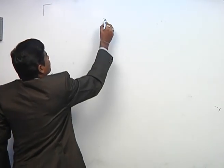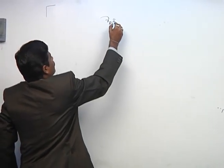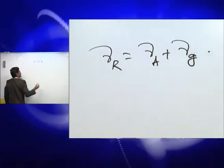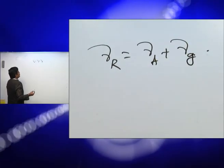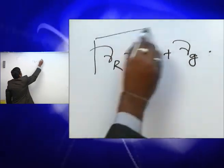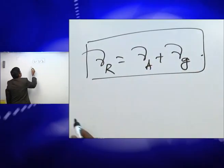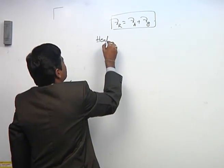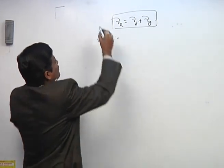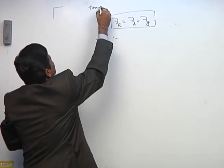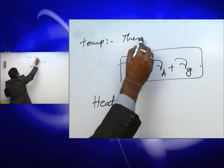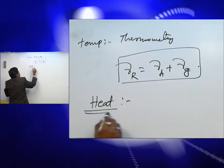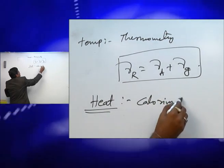From that liquids conclusion, gamma R is equal to gamma apparent plus gamma G. Next, we come to the measurement of heat. We are starting with the measurement of temperature that comes under thermometry. The measurement of heat comes under calorimetry.